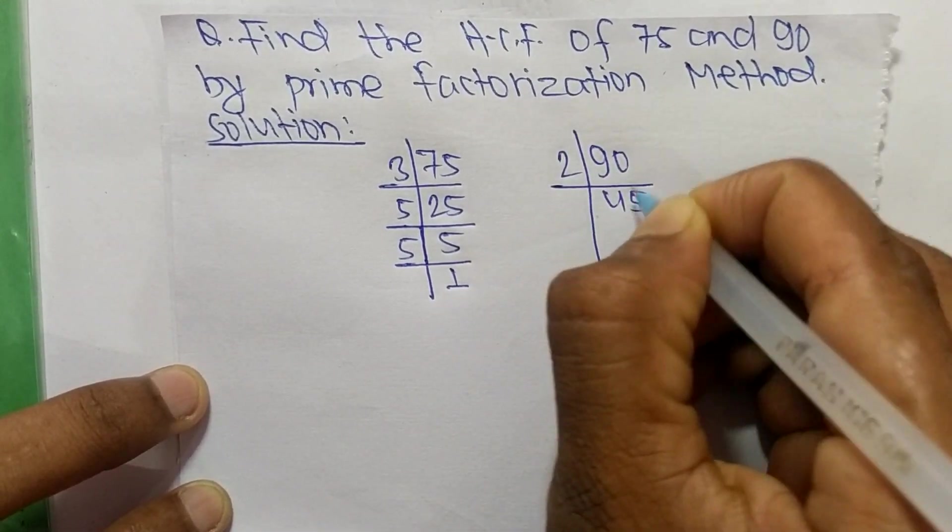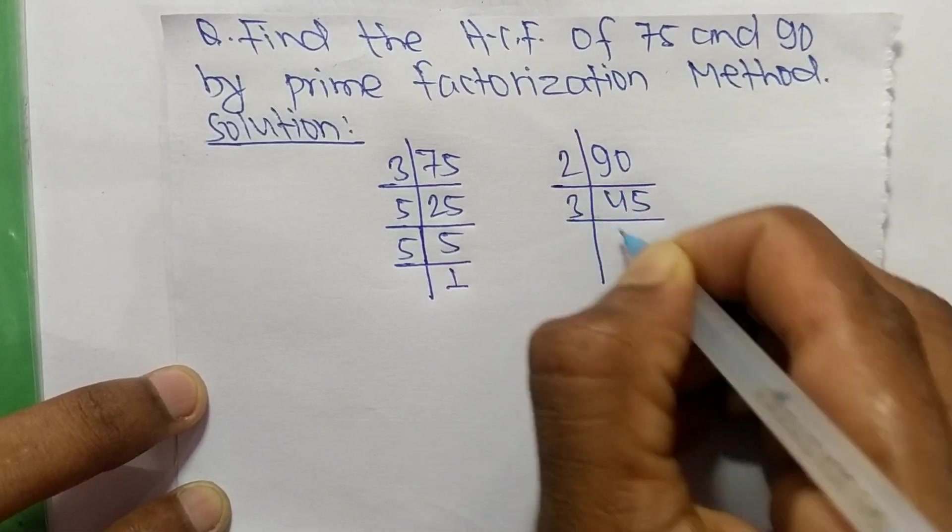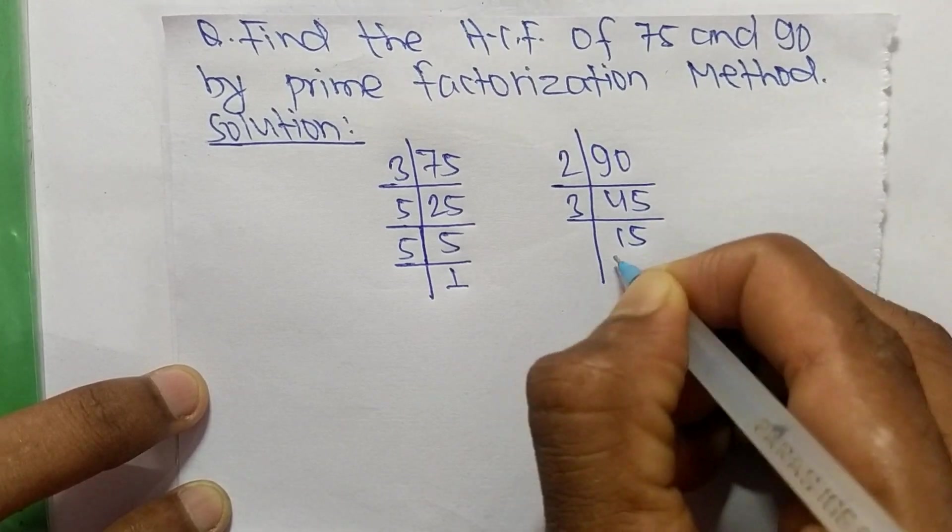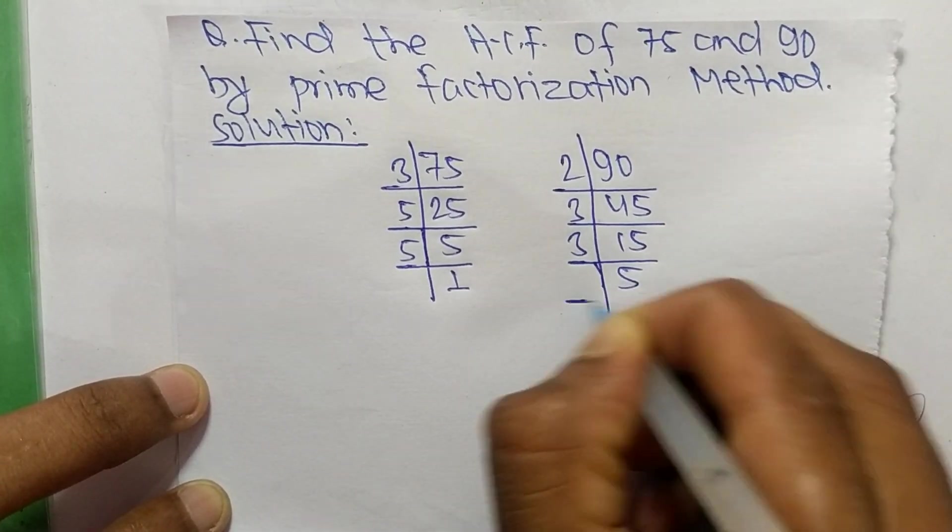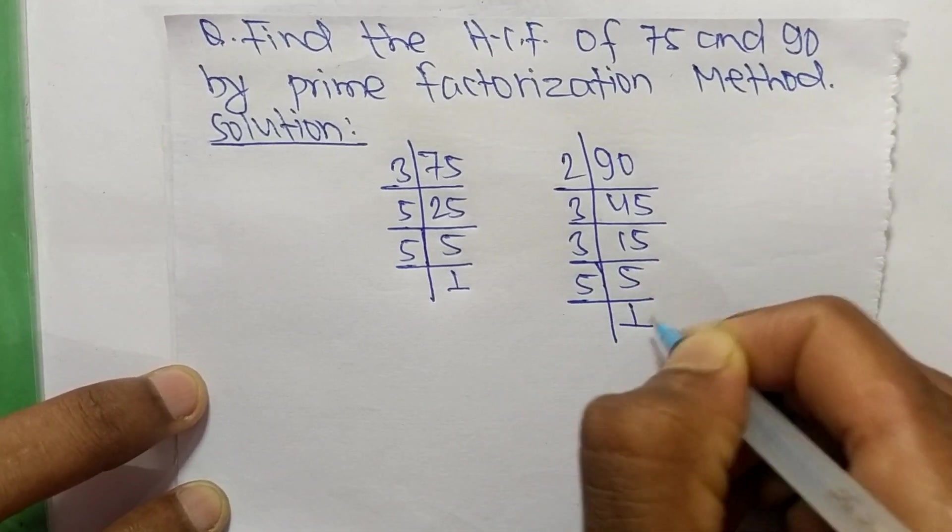...3 times 15 equals 45, 3 times 5 equals 15, and 5 times 1 equals 5.